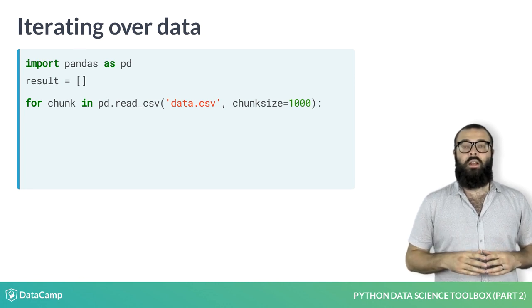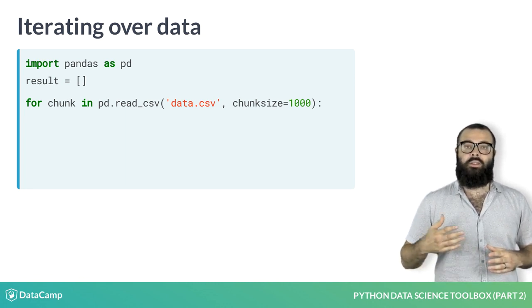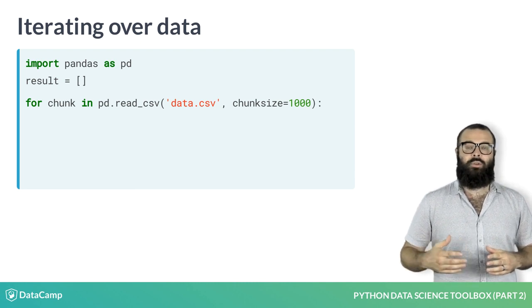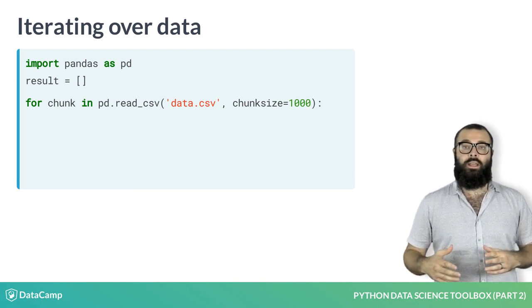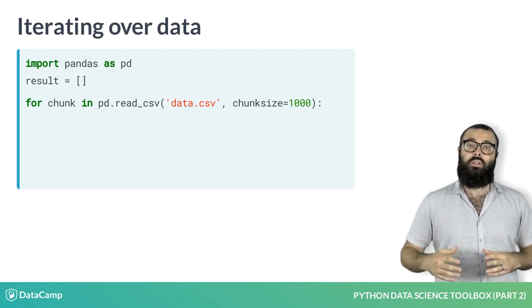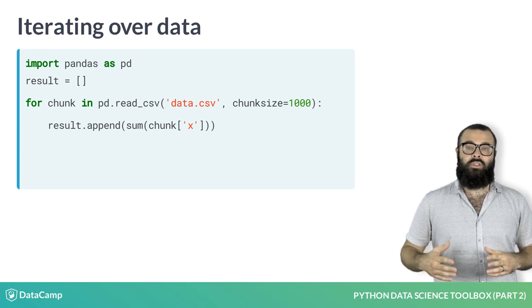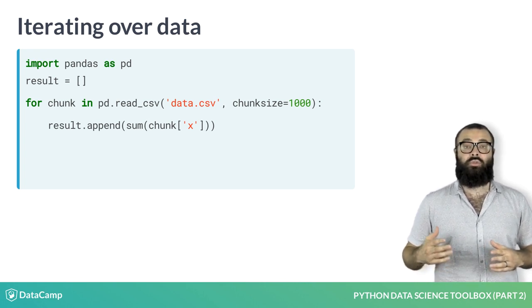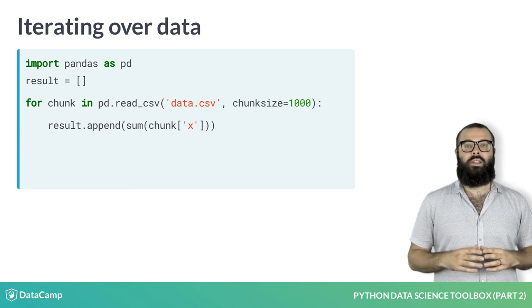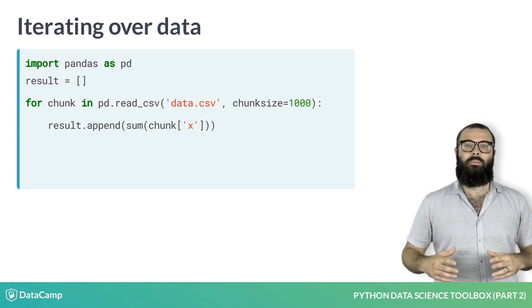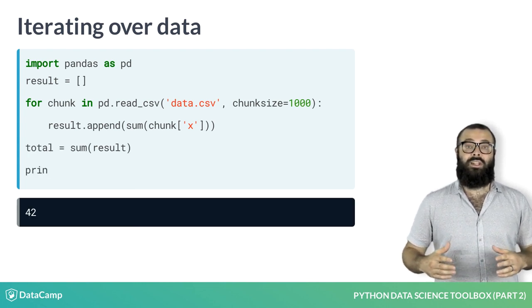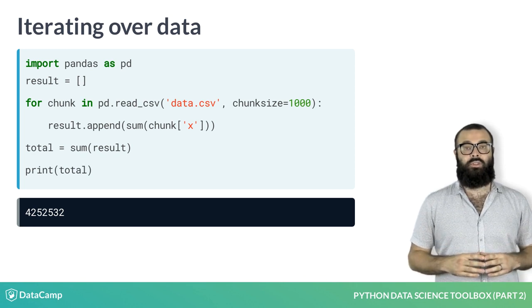You can play around with this. The object created by read_csv is an iterable, so I can iterate over it using a for loop in which each chunk will be a data frame. Within the for loop, that is, on each iteration, we can compute the sum of the column of interest, and we append it to the list result. Once this is executed, we can take the sum of the list result, and this gives us our total sum of the column of interest.